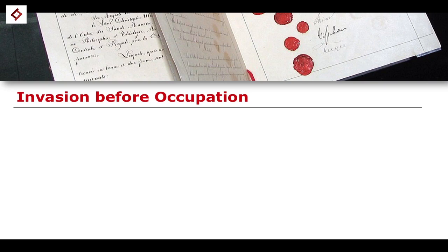Generally speaking, the template for a belligerent occupation is: firstly, an international armed conflict; secondly, an invasion of one territory by another; and thirdly, the effective control of that territory — whether it be the entirety of the territory or whether it be a part of that territory.